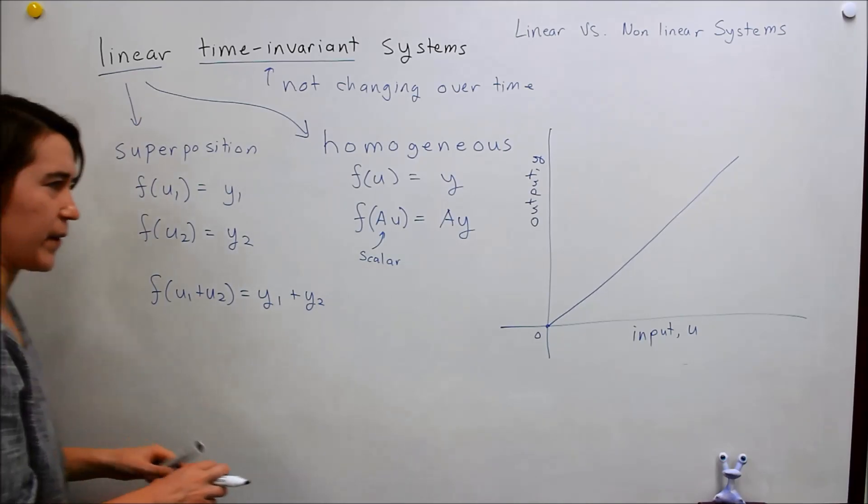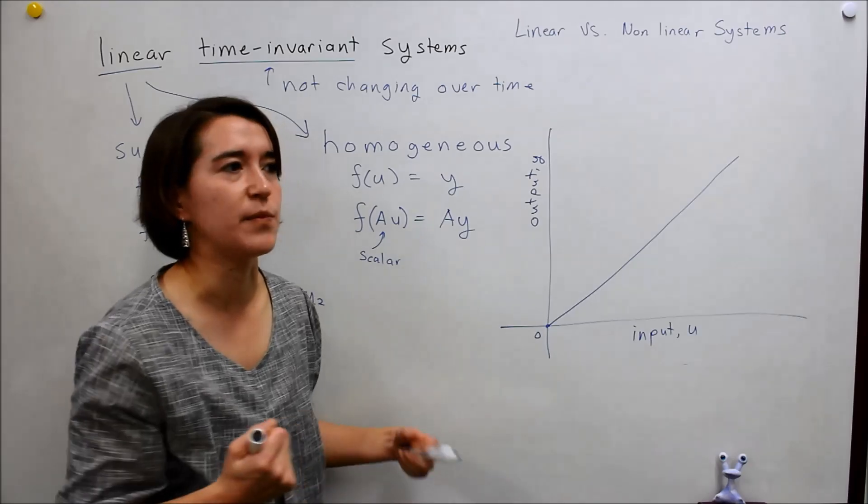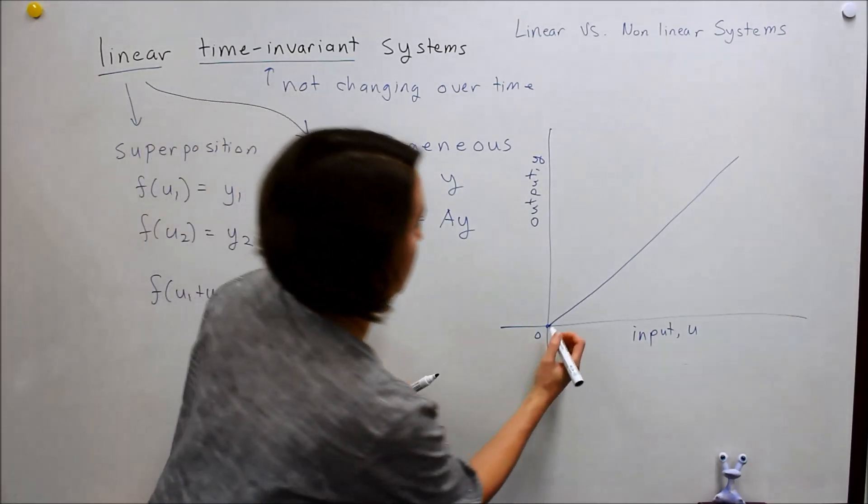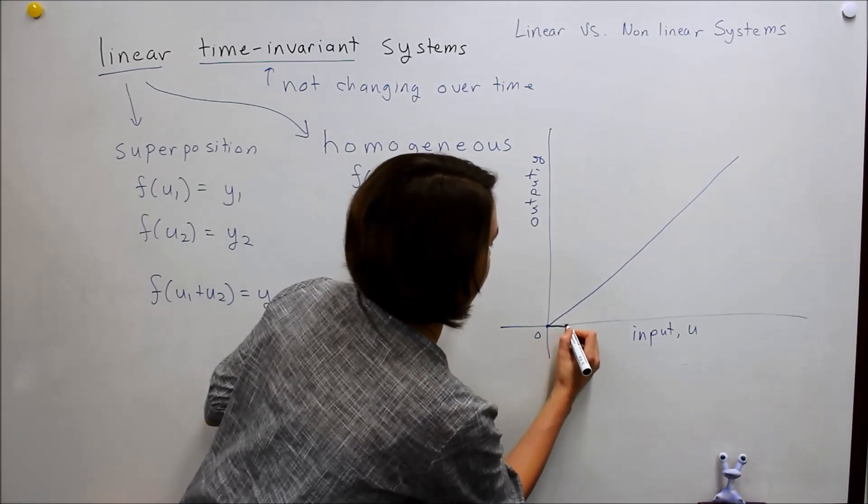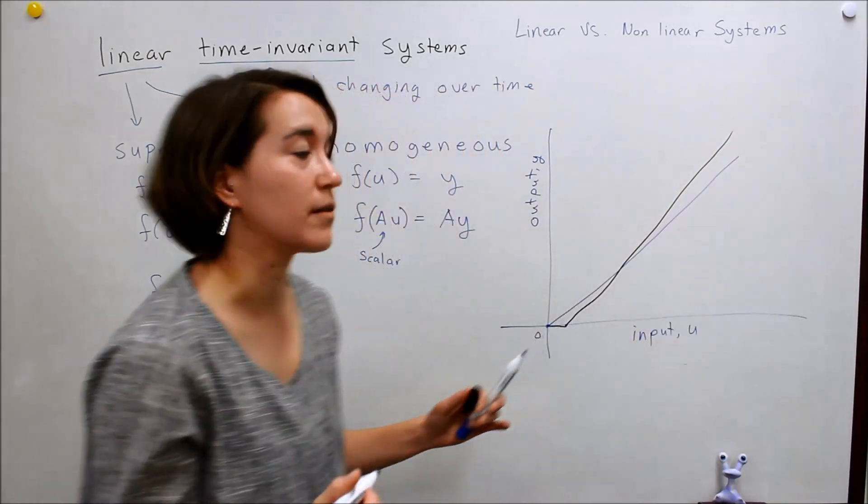And what does this mean? So, maybe you have a system where initially you put in some input, and absolutely nothing happens. You need to put in a larger input before the system starts to react. So, kind of this dead region here. And then it begins to act as a linear system.